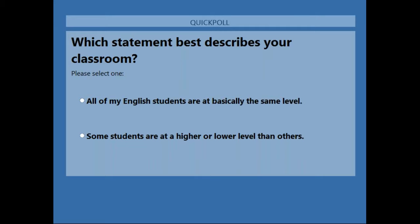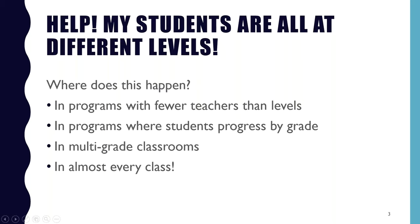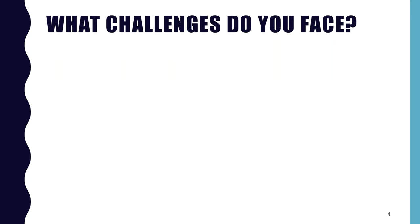Also in multi-grade classrooms — in Panama it's common for schools in remote areas to have kindergarten, first, and second grade in the same room. And no matter how well a program tests and groups students, we still have discrepancies within classes. The poll results show that 27% of people said all their students are basically the same level, and 73% have some students at a higher or lower level. If you've faced this challenge, you were probably attracted to this webinar, and if your students are all at the same level, hopefully you'll gain tips for future classes.